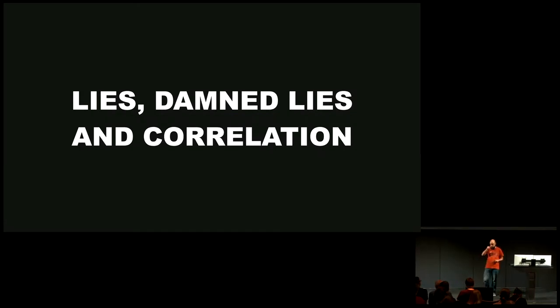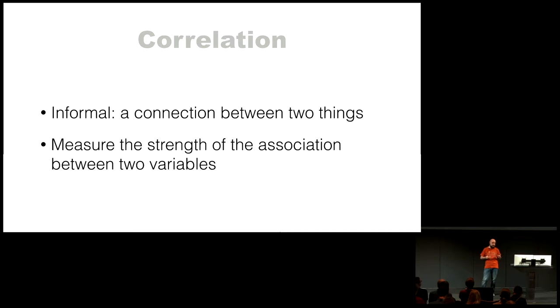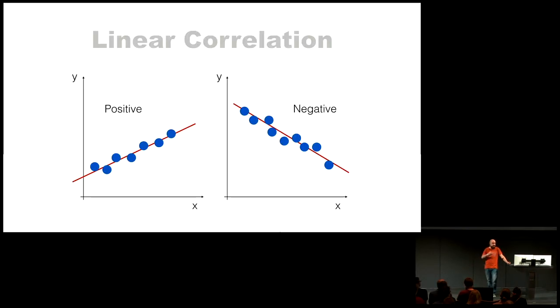I'm going to start with correlation. As a simple definition — an informal view first — it's already in the name: a couple of things that are happening together, two things that are connected somehow. More formally, correlation also gives you some sort of strength of the association between two variables. It's easier to think about linear correlation first: one variable is going up, the other variable is going up as well, following a line — that's a positive correlation. Or if one goes up, the other goes down, again linearly.